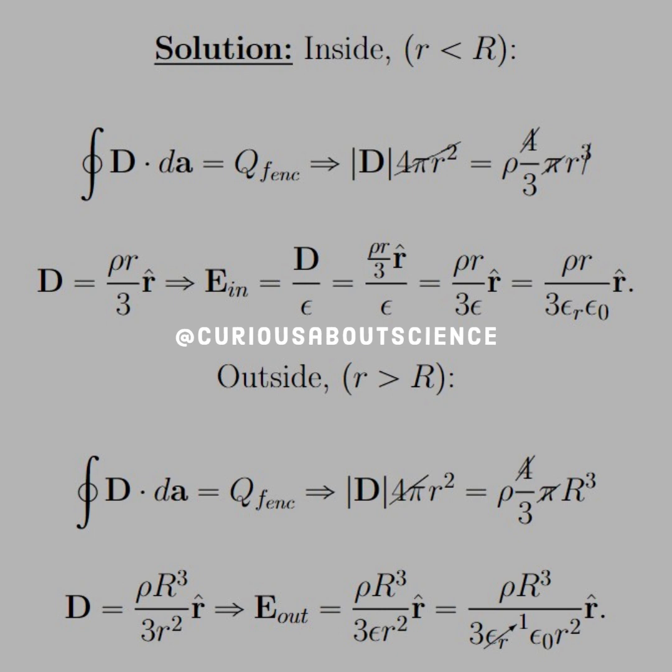We see that inside we get a lot of cancellations, leaving us with something pretty easy to work with. D equals rho r over 3 in the r hat direction. Therefore, the electric field inside the sphere is D over epsilon, and it simplifies down to this.